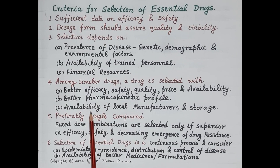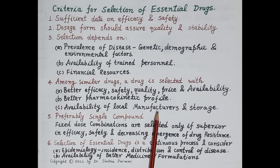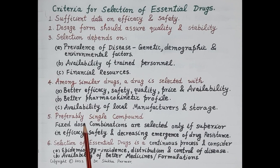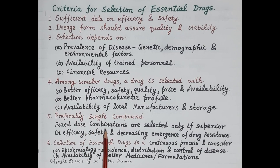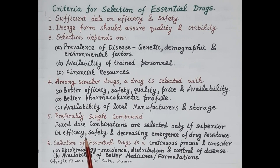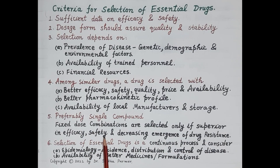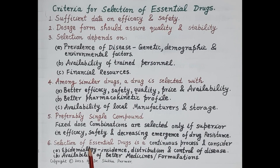There should also be availability of local manufacturers to manufacture and store the drug. Preferably, the essential drug should be a single compound. Fixed-dose combinations of two or more drugs are selected only if the combination is superior in terms of efficacy, safety, and in decreasing the emergence of drug resistance.